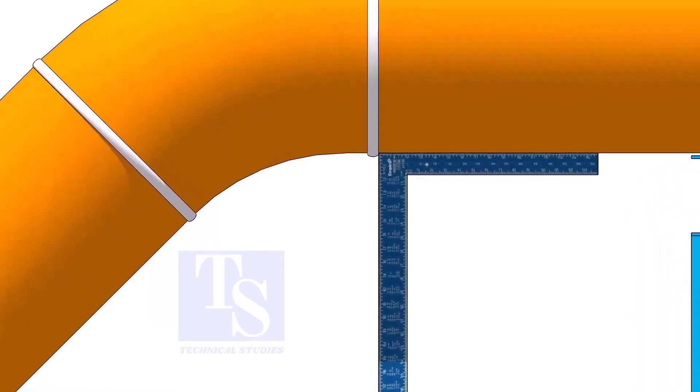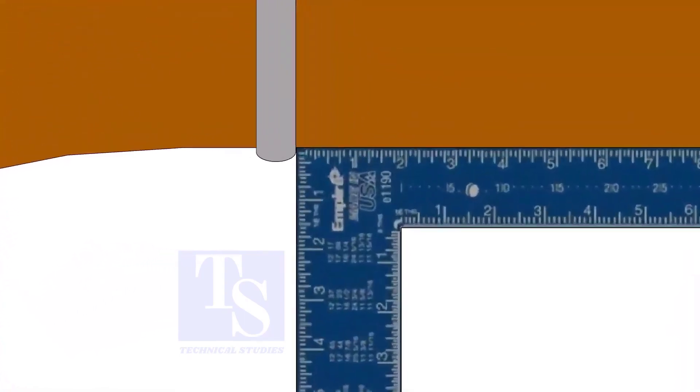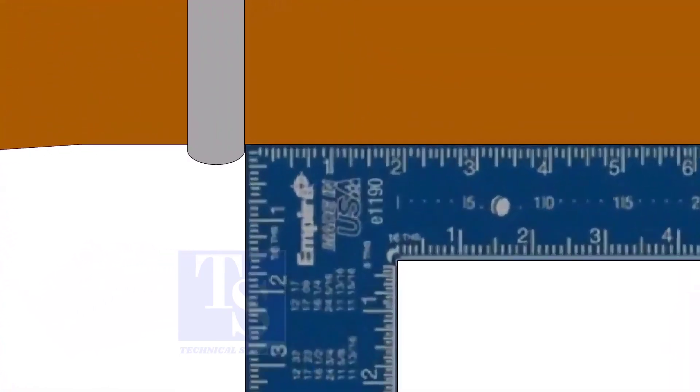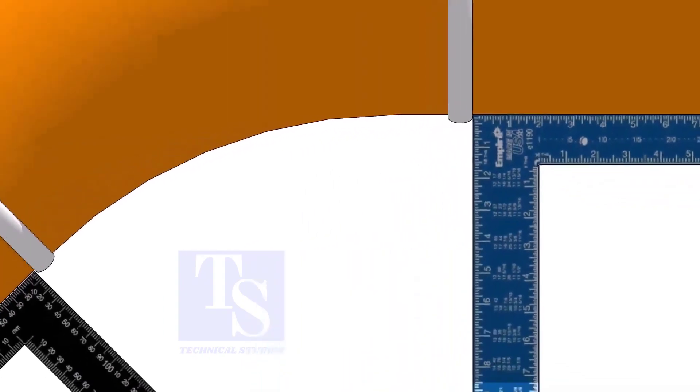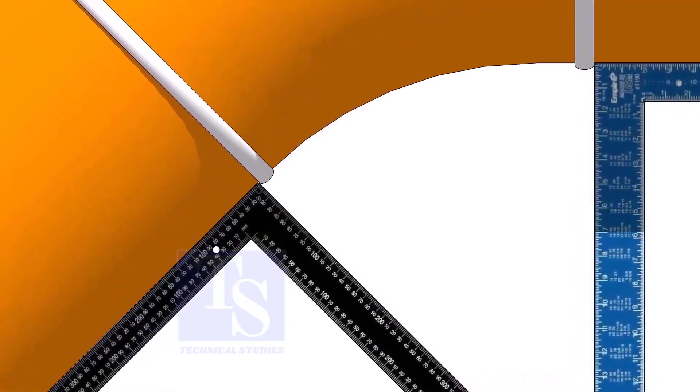Hold one right angle on the pipe just outside the weld joint, as shown. Hold another right angle on the other pipe. Make sure both the right angles are sitting on the center of the pipe.